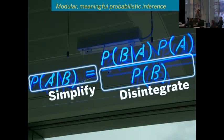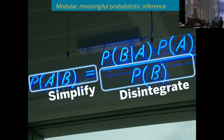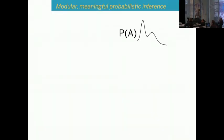Bind turns out to be easy, so in our group what we've been focusing on is to implement disintegration and simplification on many distributions, including continuous distributions.